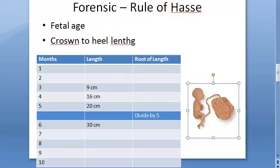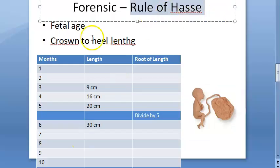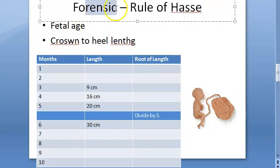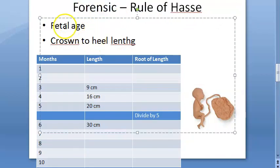In this topic, let us look at the Rule of Haase. Basically, here you're trying to estimate the fetal age — assuming there's an abortion, a criminal abortion, a medical termination of pregnancy, or female foeticide — where the fetus is available to you and you want to estimate its age.